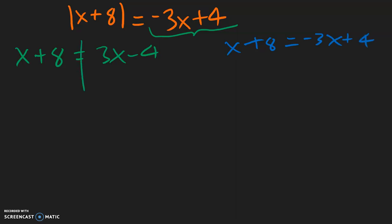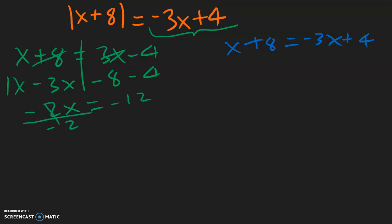So solving each equation — here we have x, bring the negative 3x over, bring that 8 over becomes negative 8, minus 4. There's a 1 in front, so 1 minus 3 is negative 2x, equal to negative 8 minus 4 which is negative 12. Dividing both sides by negative 2, you have x is equal to positive 6.